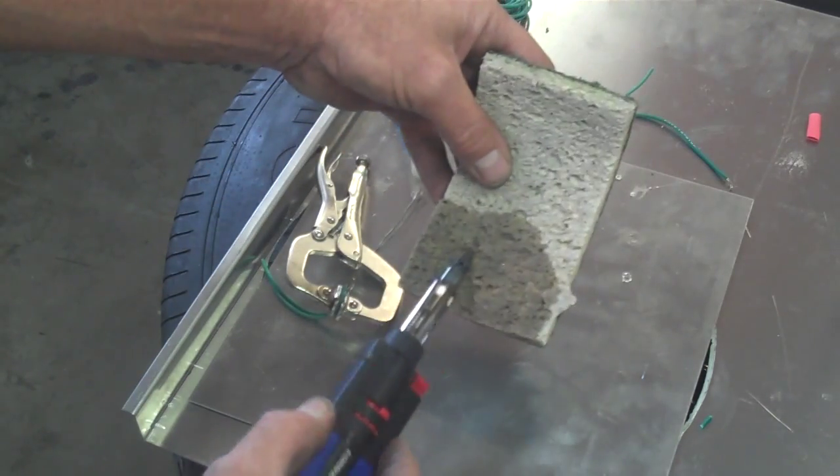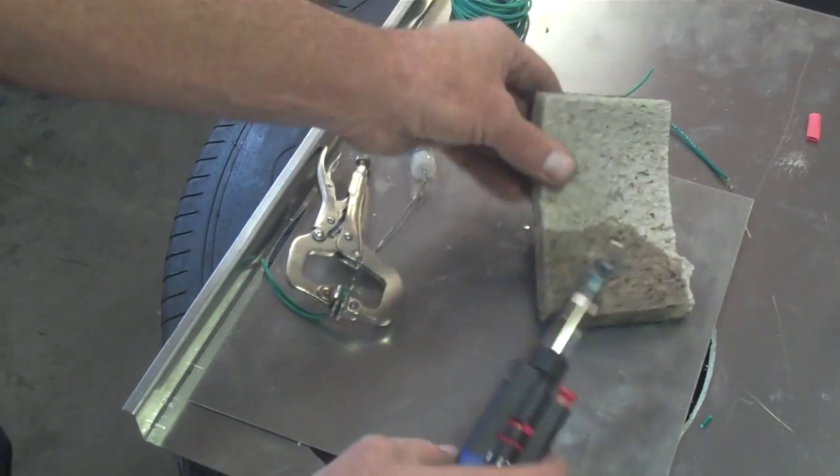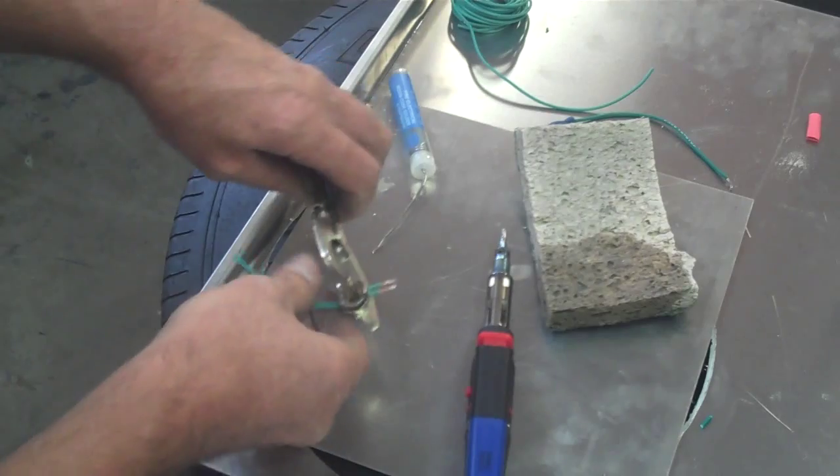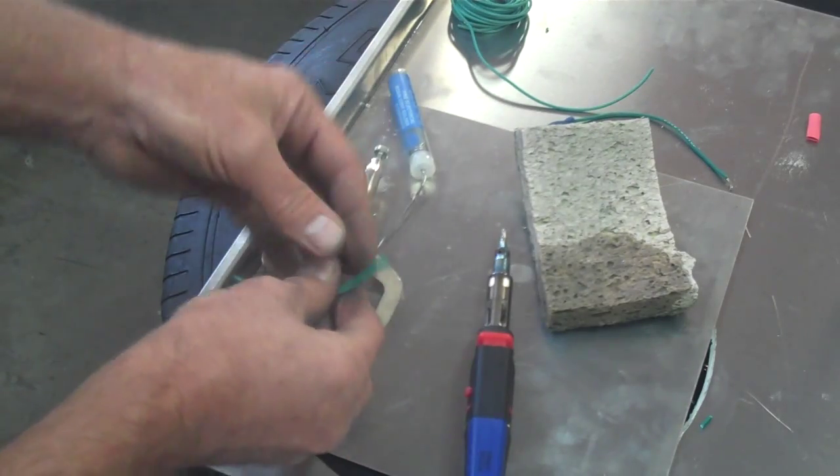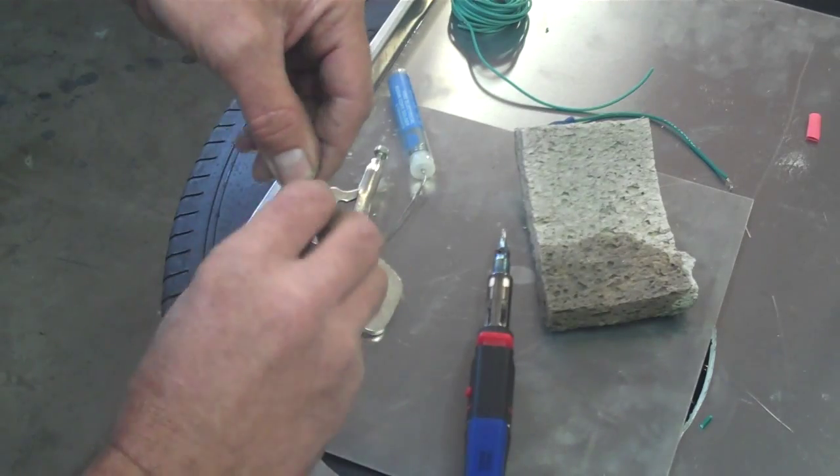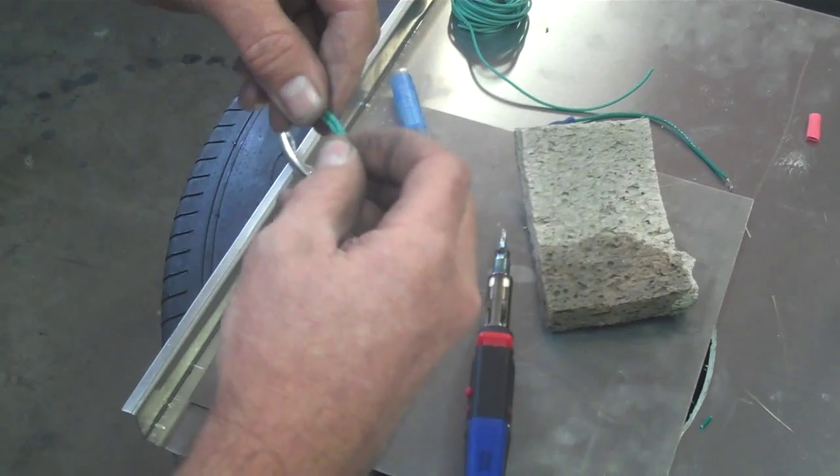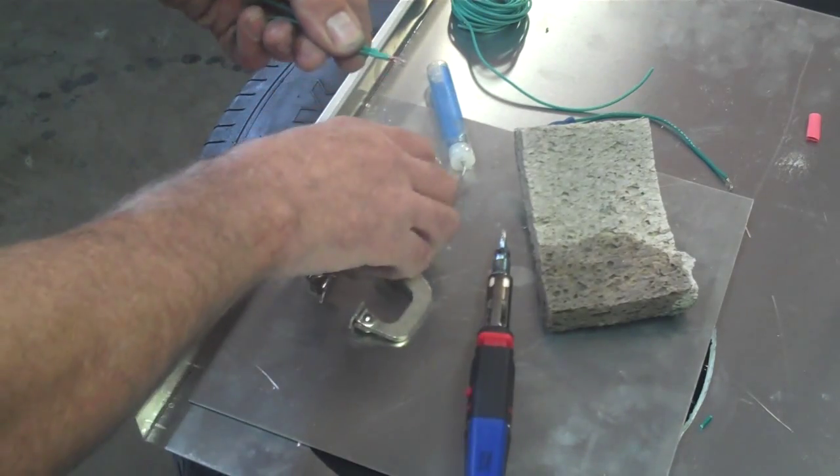I'm going to clean the soldering iron off. Set it down for a minute. Take these wires, and I'm going to give them a twist. Alright. Now the wires are twisted together.